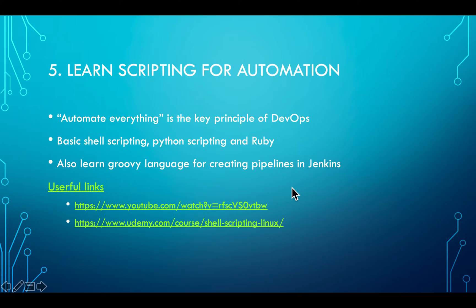The fifth step: DevOps is all about automation — automate everything, that is one of the fundamental principles of DevOps. To learn automation, you have to start learning scripting. You can learn basic shell scripting, Python scripting, or even Ruby scripting.